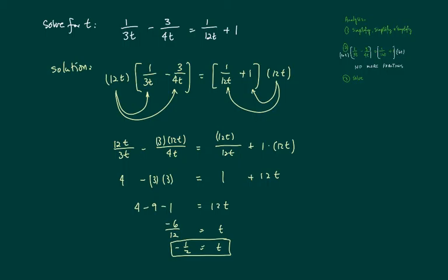Alright so here's our solution. We're going to have 12t multiplied on both sides and then we're going to distribute it inside each one of the terms so that our final thing we're trying to solve has no fraction in it. 12t divided by 3t leaves us 4 and this one leaves us 3. 3 times 3 is 9.